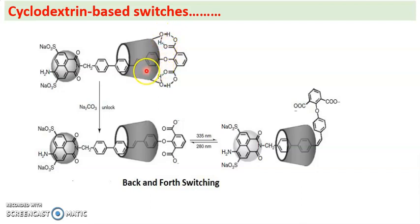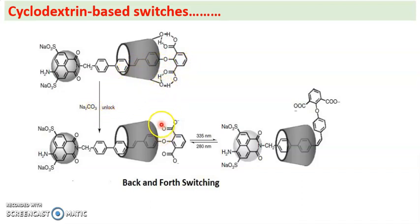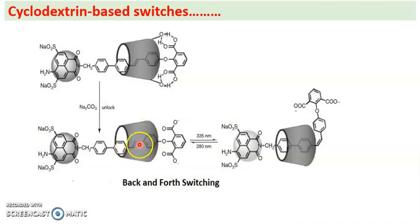When sodium carbonate is added, unlocking occurs — the hydrogen bonding is broken and the cyclodextrin resides on the stilbene unit. When irradiated with UV light at 335 nanometers, switching occurs and the cyclodextrin moves to reside on the diphenyl unit. This is back switching.